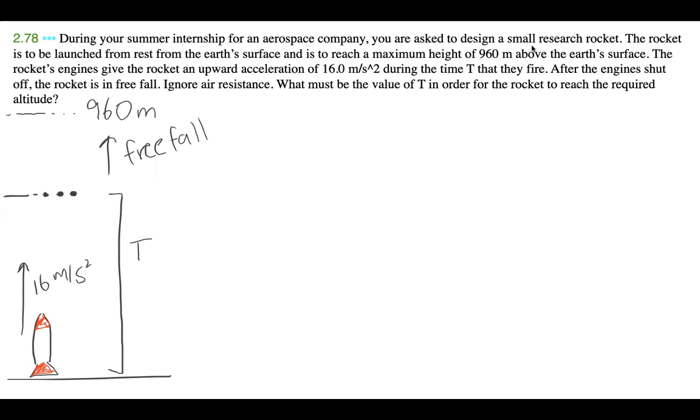So our givens in our first part. I'm just going to kind of highlight this in red. For our first part of VI, we know that it starts from rest. So VI is equal to zero meters per second. We know that it accelerates at 16 meters per second squared. And we know that the time is equal to t. And we don't know what VF is. And we know that it travels a distance we can call h1, right? So let's say that this distance right here is h1.